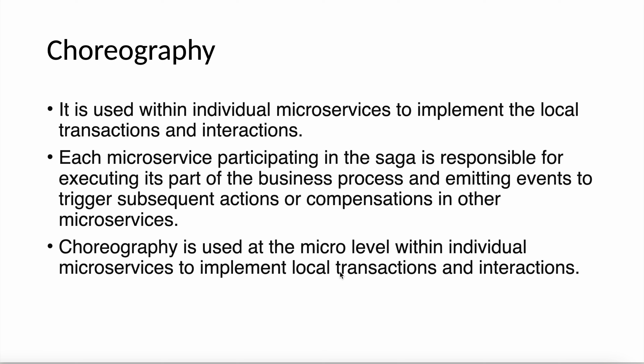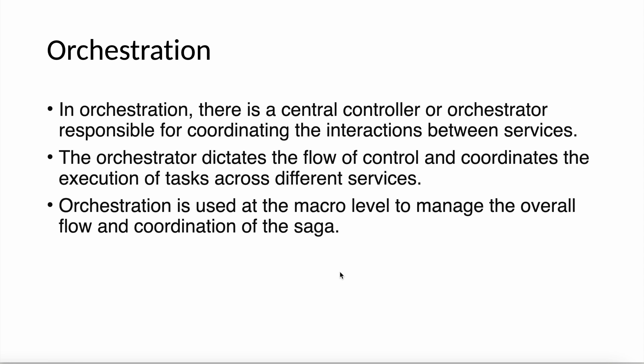Orchestration is different — there is a central controller or orchestrator responsible for coordinating the interactions between services. The orchestrator knows what steps need to be taken: it calls microservice A, and once A is completed it calls microservice B, and once B is completed it calls the next service. If microservice B fails, the orchestrator knows it must compensate microservice A by rolling it back. The orchestrator is used at the macro level to manage the overall flow and coordination of the saga.